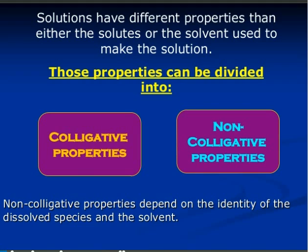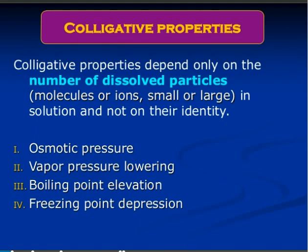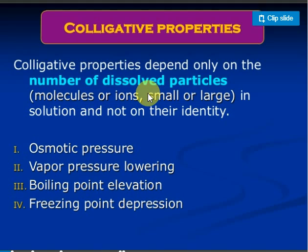The properties that depend upon the number of solute particles but not on the nature of solute particles are known as colligative properties. The number of solute particles decides the behavior of the solutions. For example, one mole of glucose gives Avogadro's number of particles, but 58.5 grams of NaCl (one mole) gives two times Avogadro's number of particles — one mole of sodium ion and one mole of chloride ion. These numbers decide the colligative properties.